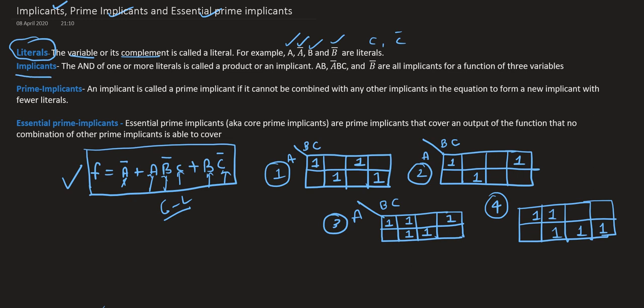Now, what are implicants? An AND of one or more literals is called an implicant. For example, how many implicants are there in this equation? This is one implicant — it is AND of three literals. This is also an implicant because it is AND of two literals. This is AND of one literal, so it is also called an implicant. So there are three implicants.